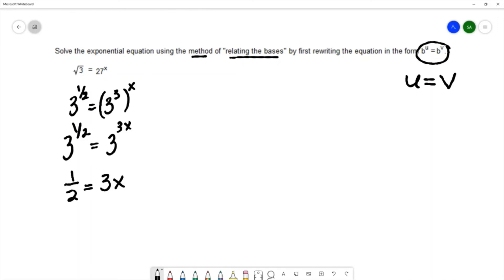This gives me a simpler equation and I'll solve by getting x by itself, so I can divide both sides by 3. When you divide fractions you want to multiply by the reciprocal, so this is one half times one third. The reciprocal of 3 is one third, and that's x equals one sixth.